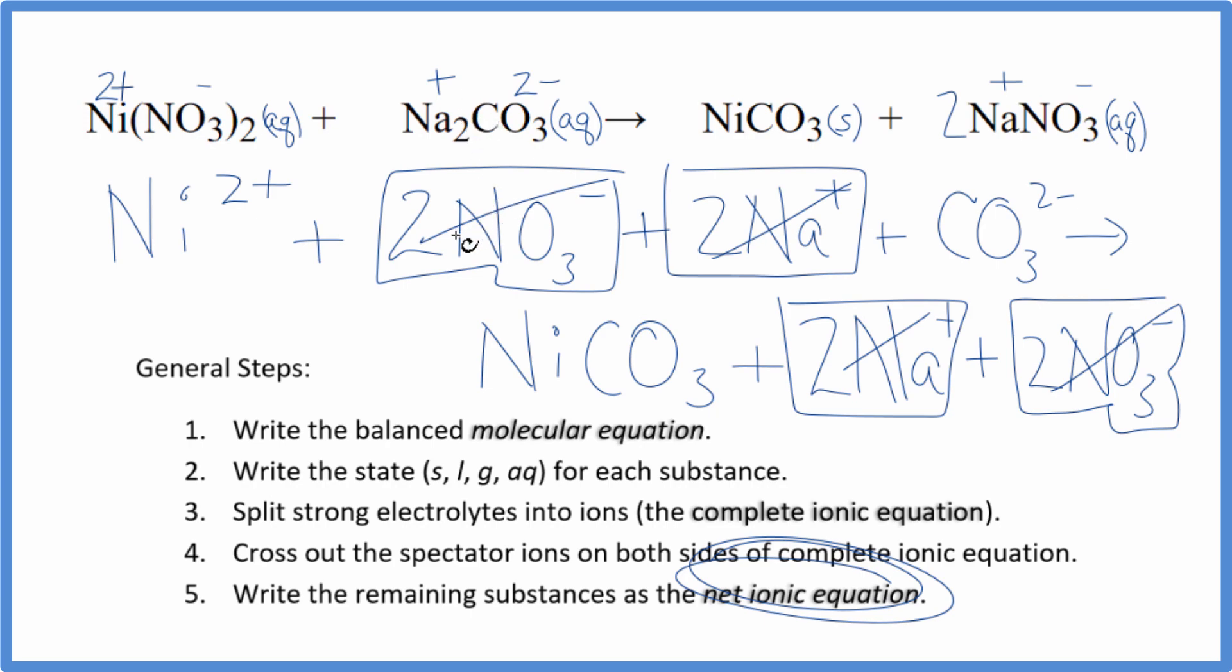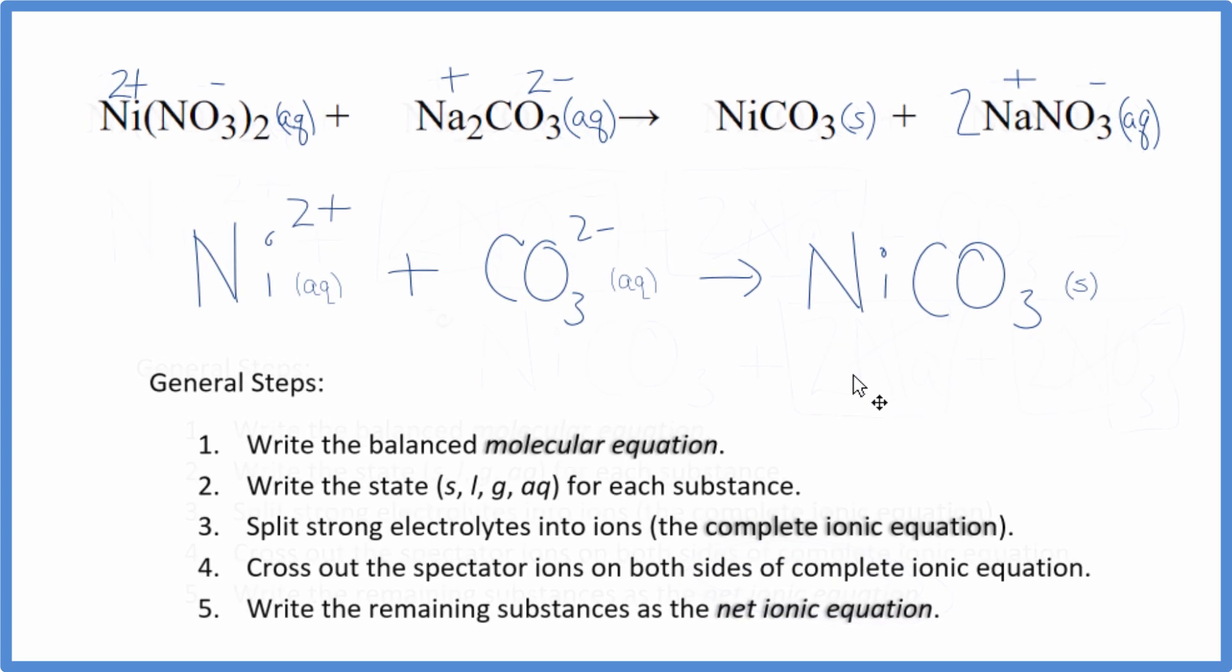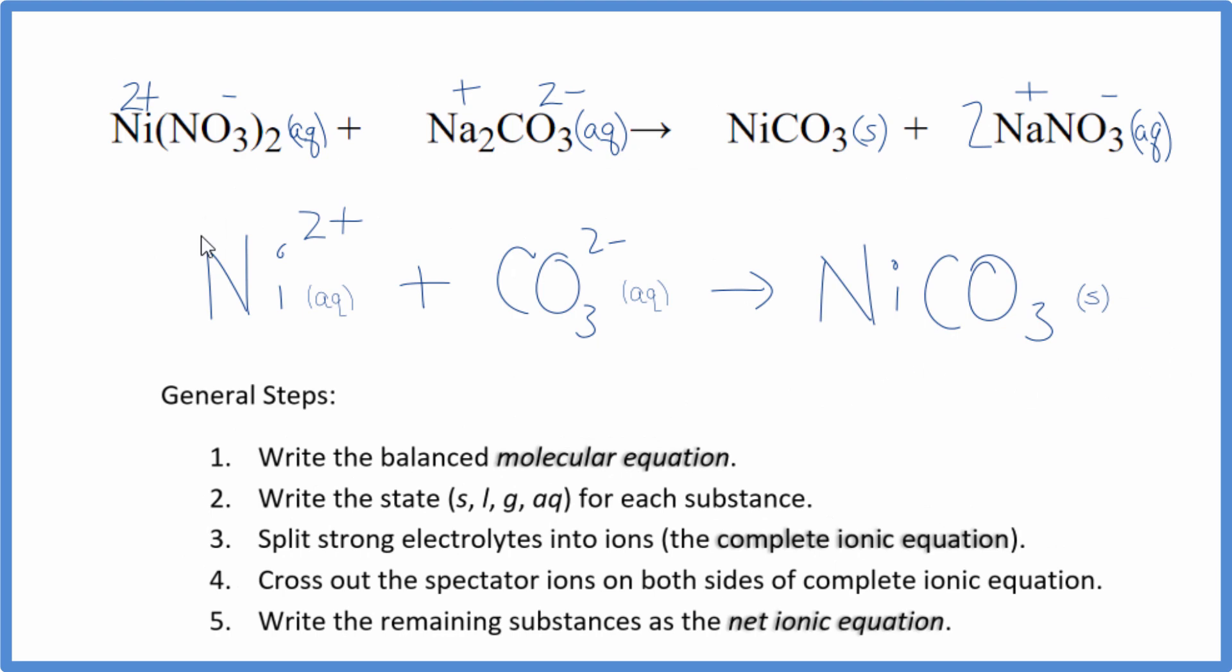I'll clean it up, write the states. We'll have our net ionic equation. So this is the balanced net ionic equation for Ni(NO3)2 plus Na2CO3. You'll note that charge is conserved. We have a two plus here and then the two minus here. That gives us a net charge of zero. Over here, neutral compound, net charge of zero. The atoms, they're also balanced. So this is the net ionic equation. And thanks for watching.